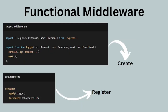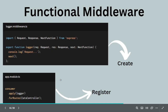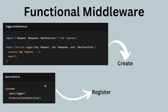Now let's move forward to functional middleware. Just like with class middleware, there are two steps: creating and registering. Creating a functional middleware is simple — instead of exporting a class, you export a function. There is no need for any decorator, and the same three types — Request, Response, and NextFunction — are imported just like before. The function again takes three arguments: request, response, and next.